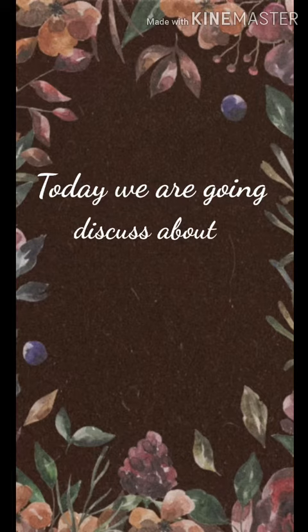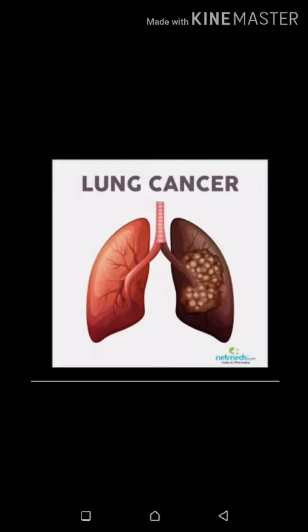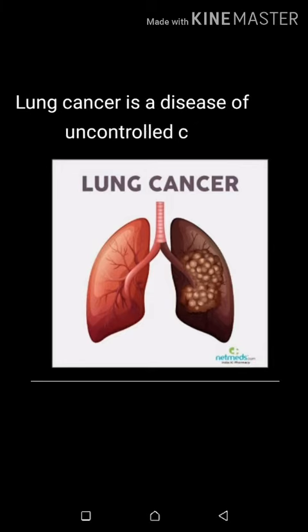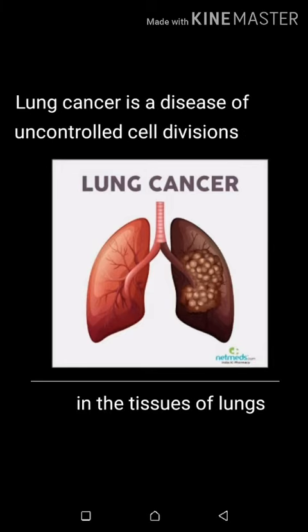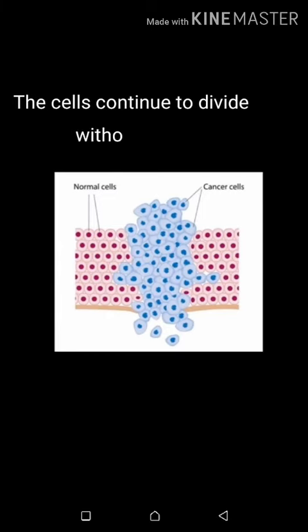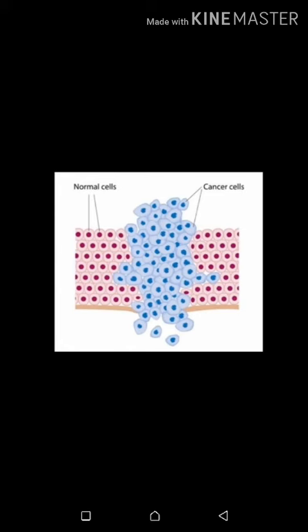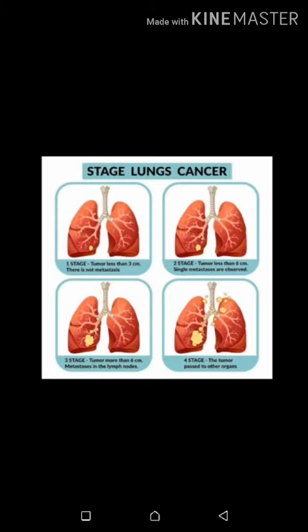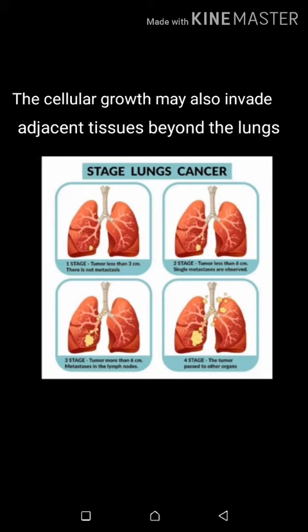Today we are going to discuss lung cancer. Lung cancer is a disease of uncontrolled cell division in the tissues of the lung. The cells continue to divide without any control and form tumors. The cellular growth may also invade adjacent tissues beyond the lungs.